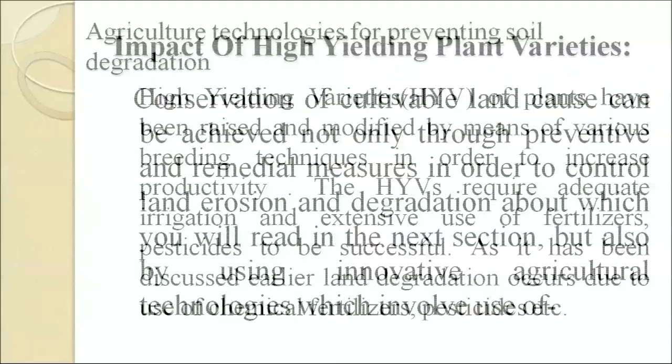Impact of high-yielding varieties (HYVs): HYVs of plants have been raised and modified by various breeding techniques to increase productivity. However, HYVs require adequate irrigation and extensive use of fertilizers and pesticides to be successful. As discussed earlier, land degradation occurs due to use of chemical fertilizers, pesticides, etc.